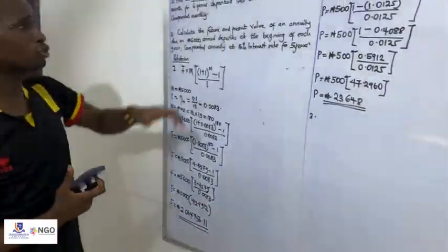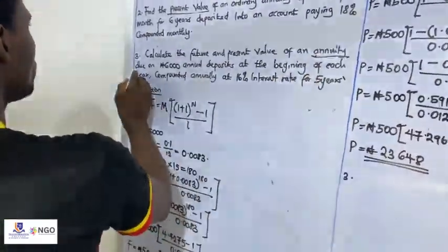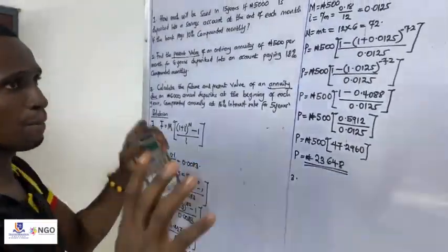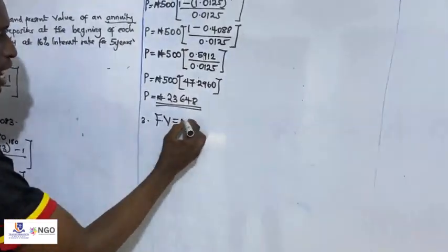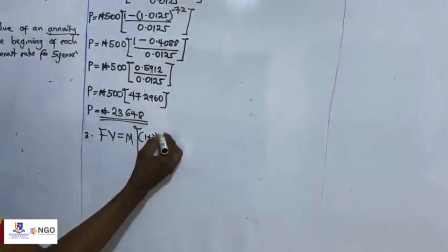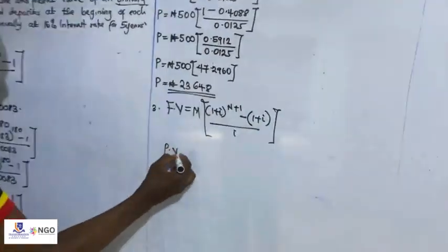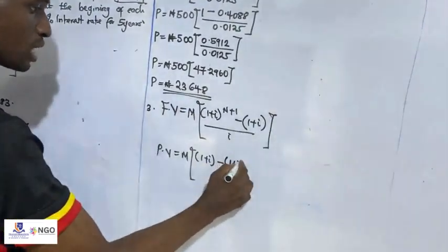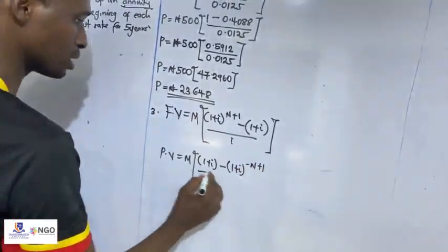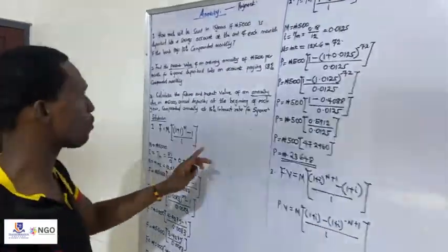Calculate the future value and present value of annuity due. For annuity due, we are calculating both future and present value. Let's look at the formulas. Future value of annuity due: FV = M × [(1 + i)^(n+1) − (1 + i)] / i. Present value of annuity due: PV = M × [(1 + i) − (1 + i)^(−n+1)] / i.